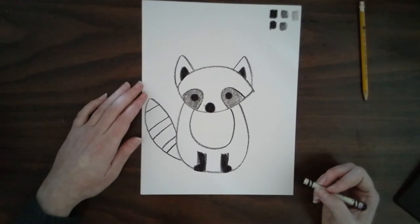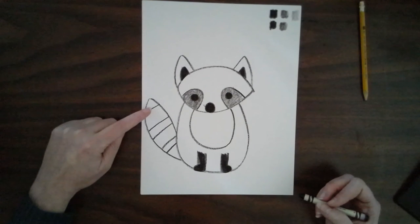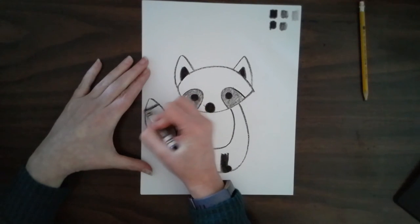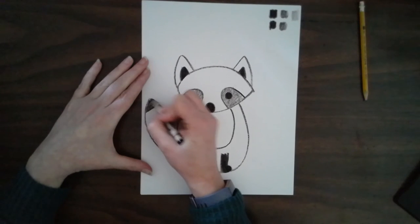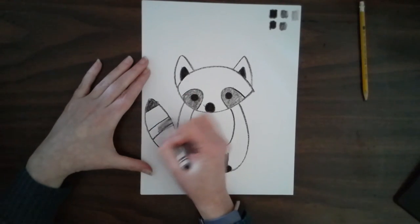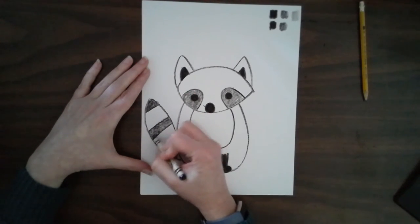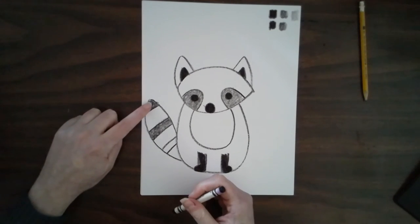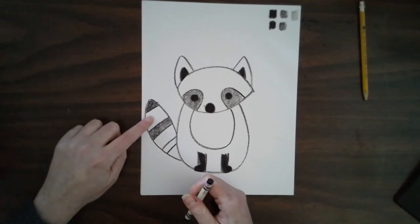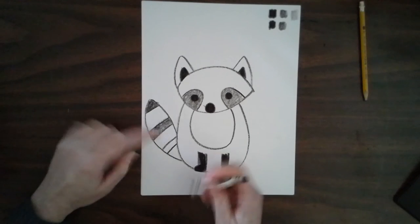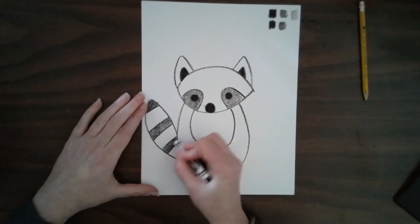Alright, my next medium value I'm going to put over here in some of the stripes on my tail. So it's like a pattern. I'm going to do medium value, white, medium value, white, medium value, white.